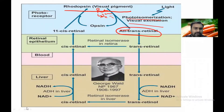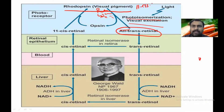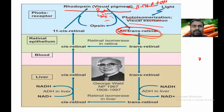Rhodopsin is made up of 11-cis retinal plus opsin. When light falls on the rhodopsin in the retina, rhodopsin is converted to metarhodopsin 1, 2, and ultimately it is converted to 11-trans retinal, and opsin is reutilized.